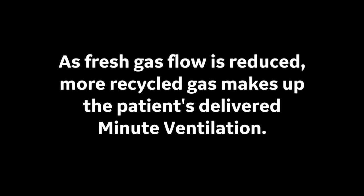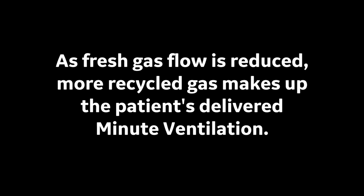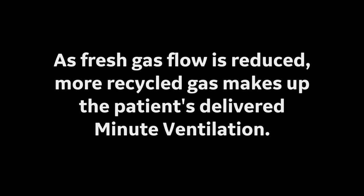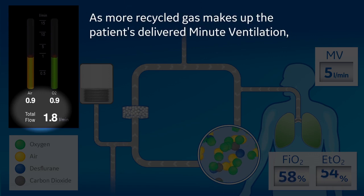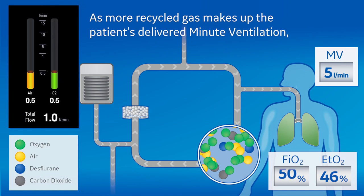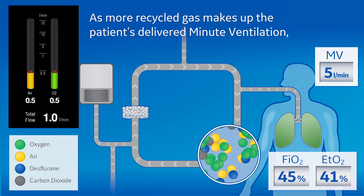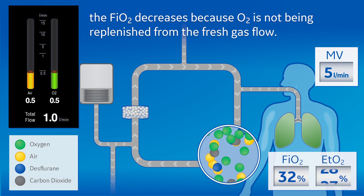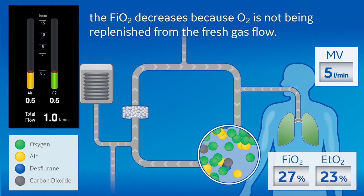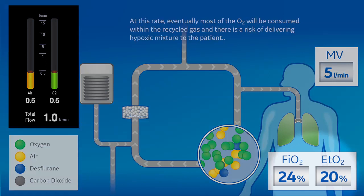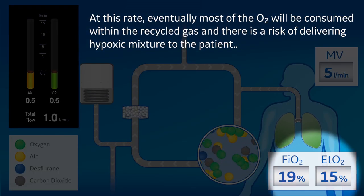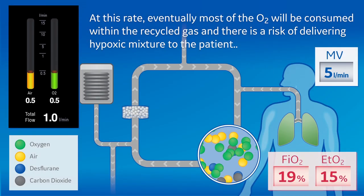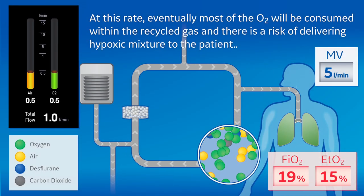As fresh gas flow is reduced, more recycled gas makes up the patient's delivered minute ventilation. As more recycled gas makes up the patient's delivered minute ventilation, the FiO2 decreases because oxygen is not being replenished from the fresh gas flow. At this rate, eventually most of the oxygen will be consumed within the recycled gas and there is a risk of delivering a hypoxic mixture to the patient.